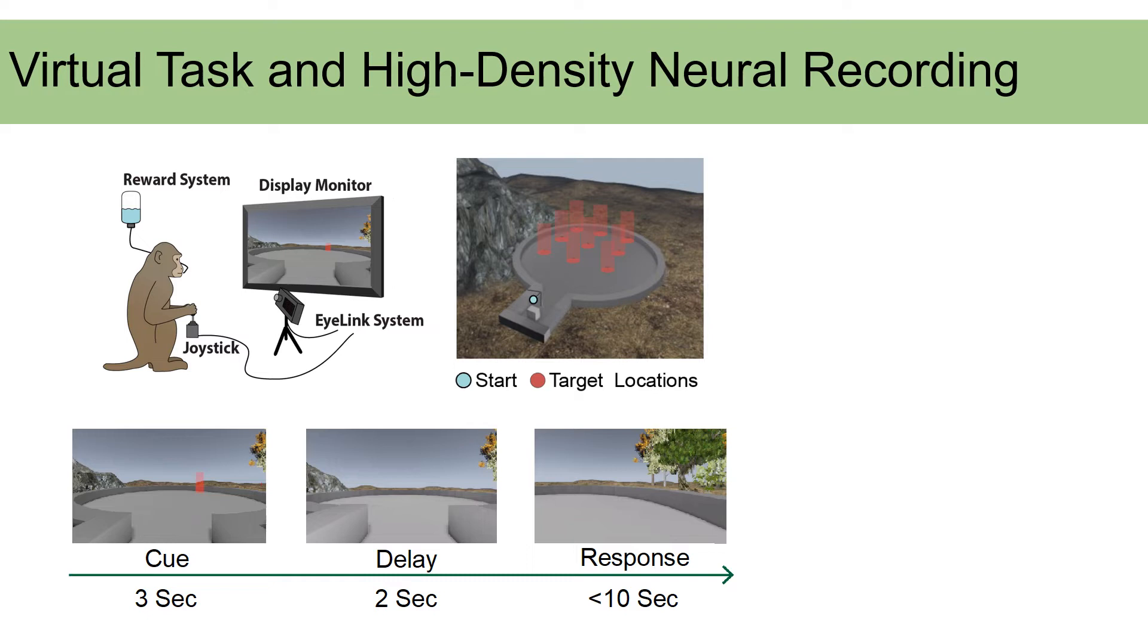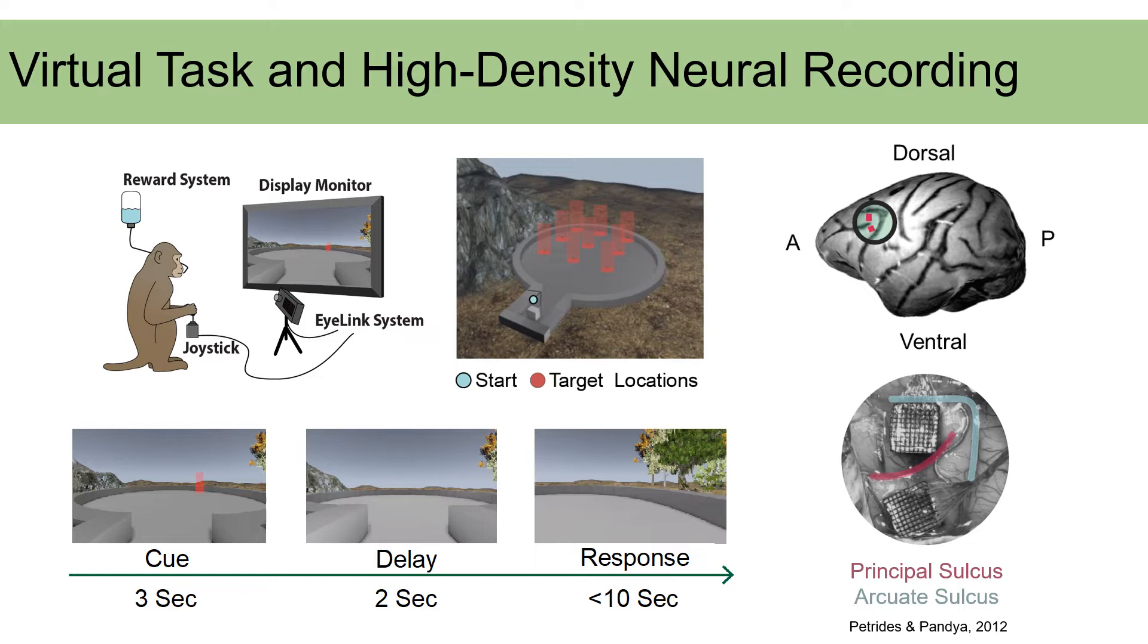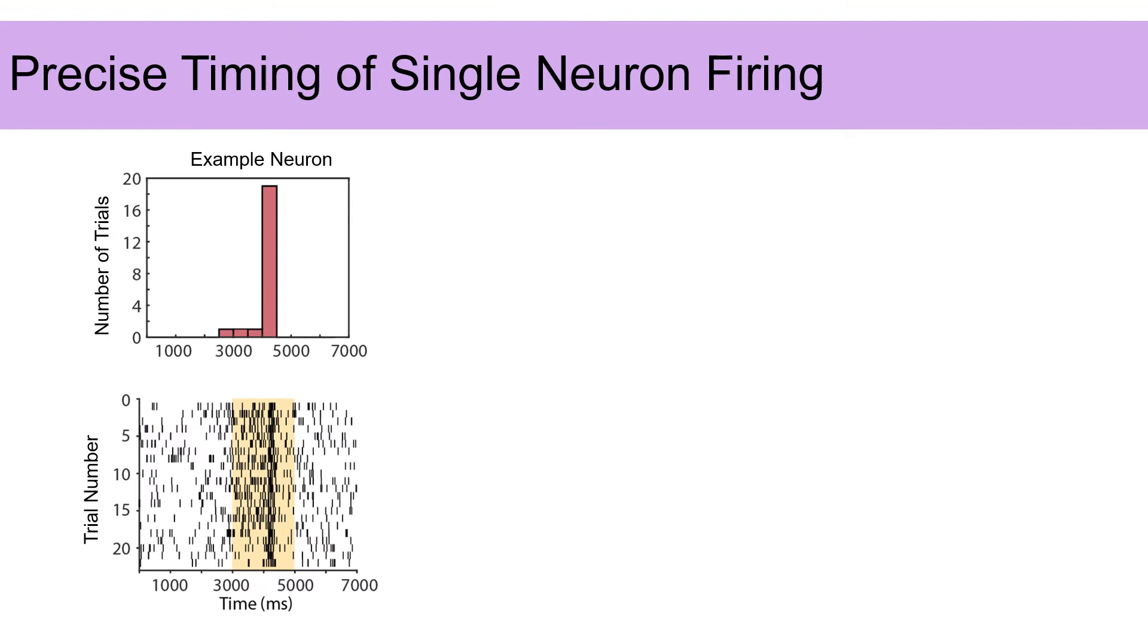During the task, a target is presented in one of these nine locations and then disappears during a two-second delay period. Animals then have to navigate to the cued location during the response period. We recorded neural activity during this task using two 96-channel Utah arrays, implanted in two rhesus macaques in the lateral prefrontal cortex.